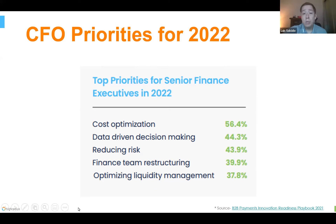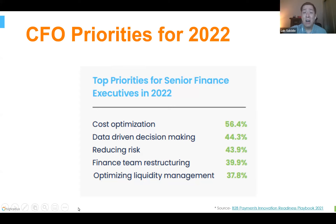On the accounts payable side, the top priorities for 2022 collected from the Arden Partners study are: implementing AP automation, improving reporting — which is critical for visibility for all users — data analytics, which goes hand in hand with reporting, and obviously eliminating paper invoicing. We want to reduce the manual work that users are doing, and in doing so this will help us retain top talent.